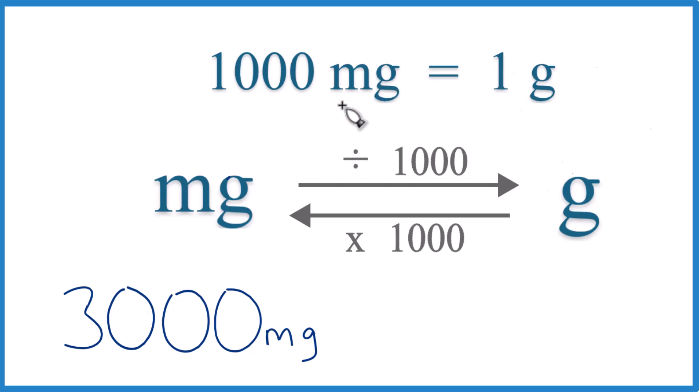And you can see pretty clearly, if we have 1,000 milligrams is 1 gram, then 3,000 milligrams is going to be 3 grams. But let's set it up here.